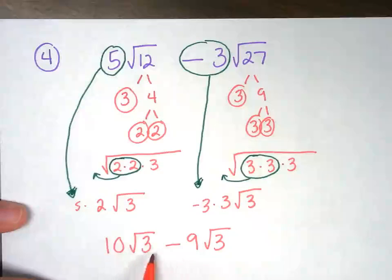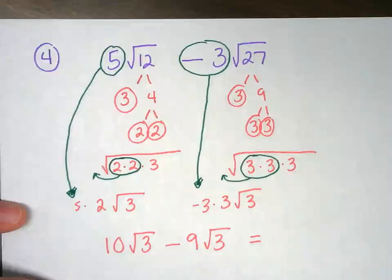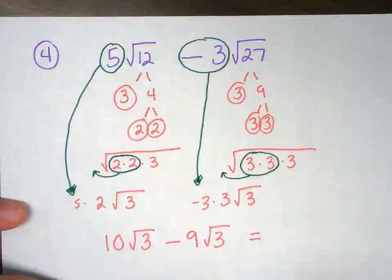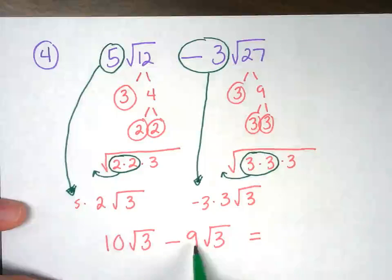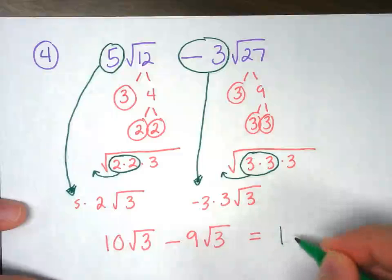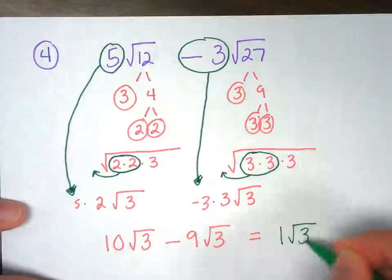So notice here, our radicals are the same now. All we have to figure out is, what is 10 minus 9? That equals 1. And then the √3s will stay the same.